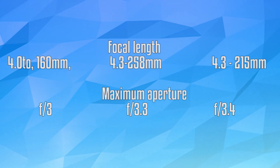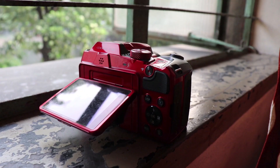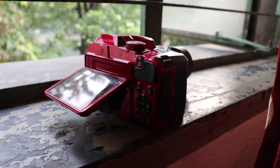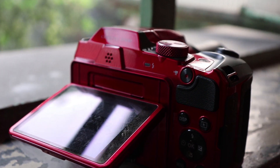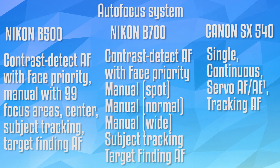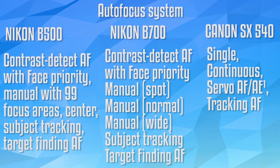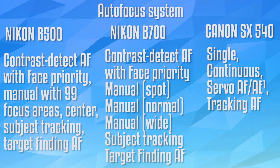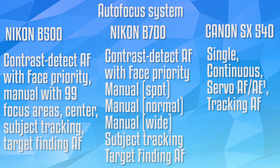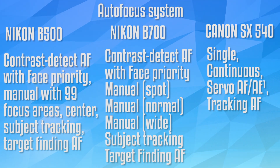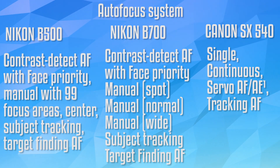There is vibration reduction mode in the B500. Talking about the autofocus system, the Nikon B500 offers contrast detect autofocus with face priority manual mode, 99 focus areas, center subject tracking, and target finding autofocus.